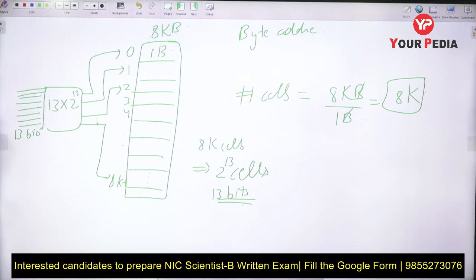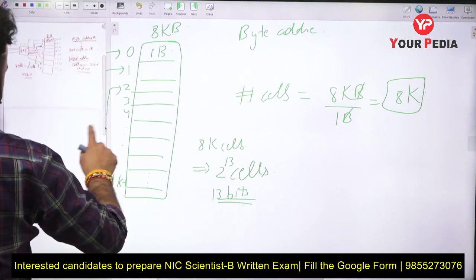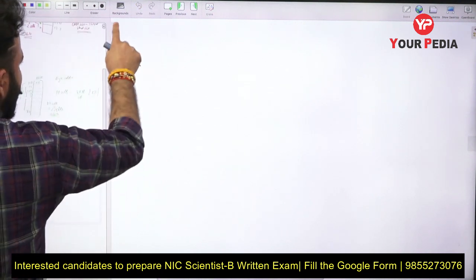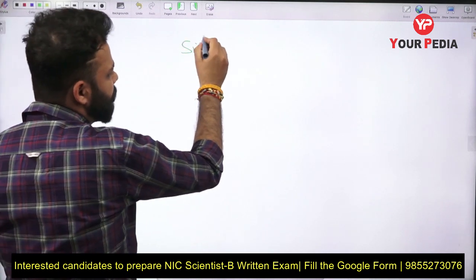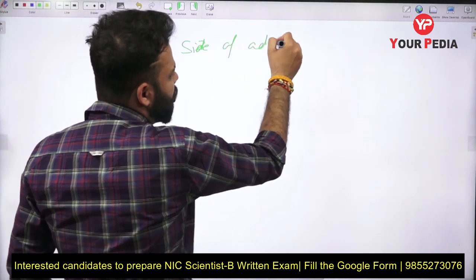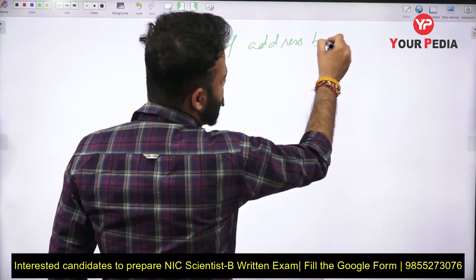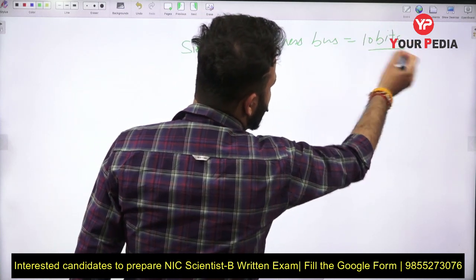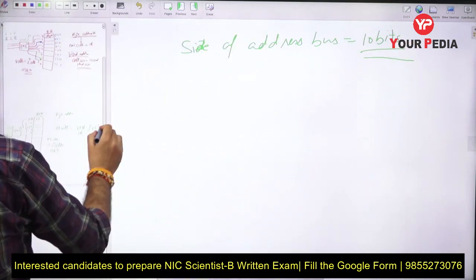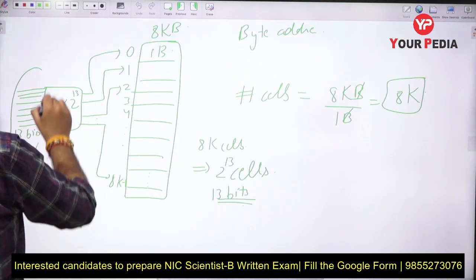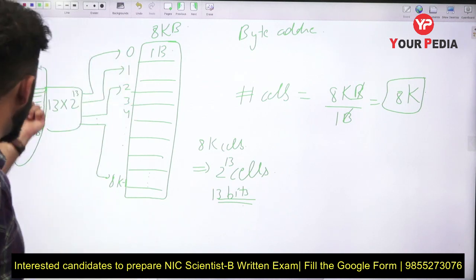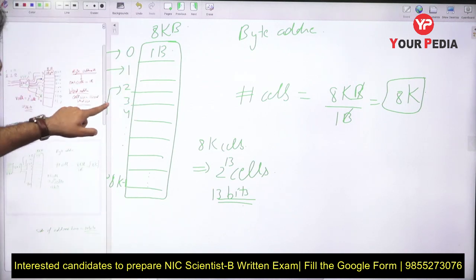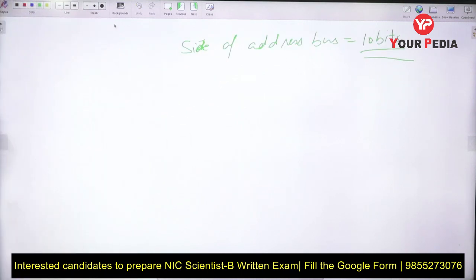Now let's try another variation. Let's say you have been given that the size of the address bus is 10 bits. The address bus is connected to the decoder which further gives you the addressing. For the previous 8KB case the bus size was 13 bits, so now let's say it is given as 10 bits.